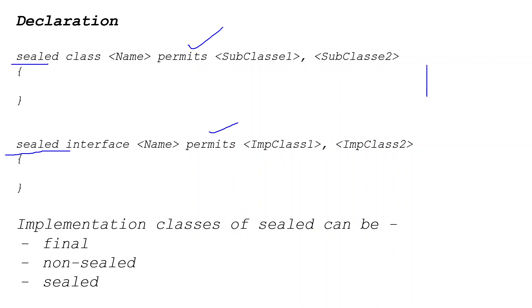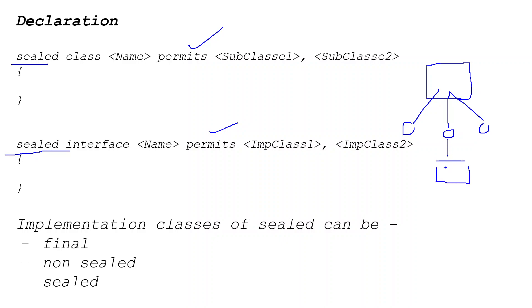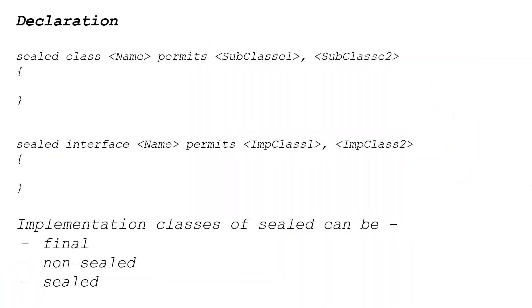Whenever a class is marked as sealed, all its permitted subclasses must follow specific rules. The subclasses permitted by the sealed class should generally be marked as 'final'. If you don't mark them as final, they must be marked as 'sealed' or 'non-sealed'. So the implementation classes of a sealed class can be final, non-sealed, or sealed themselves.